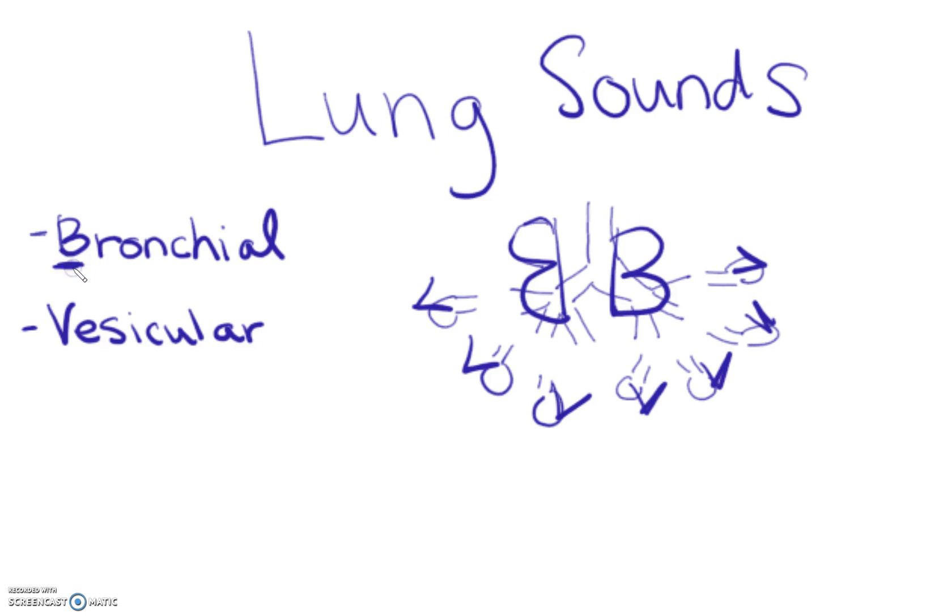You can also draw this picture where you have B for your bronchial sounds. We're going to draw lungs here, so B, and then your vesicular sounds can go around the outside. V, V, V for vesicular, and you end up making this lung shape with B's and V's where your bronchial and vesicular sounds are heard. Another trick is that the V in vesicular can stand for alveolar.